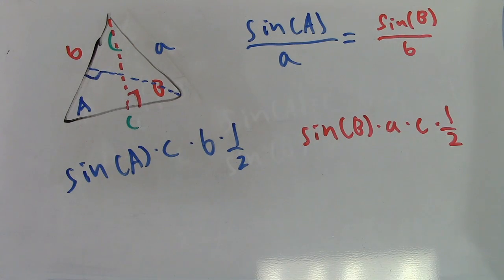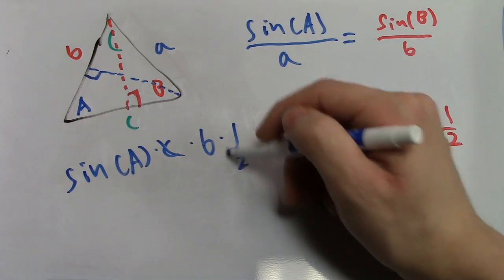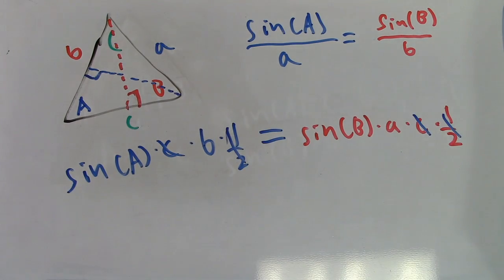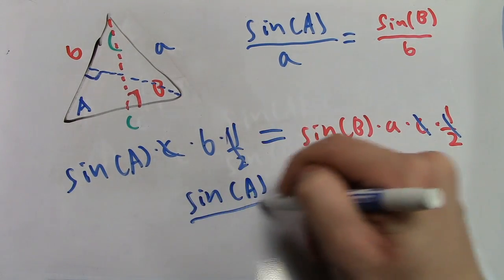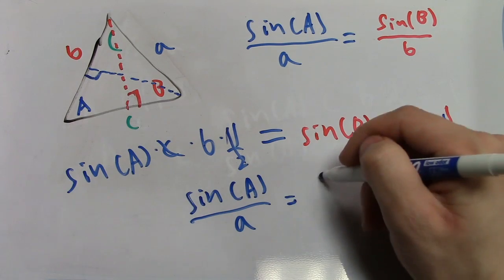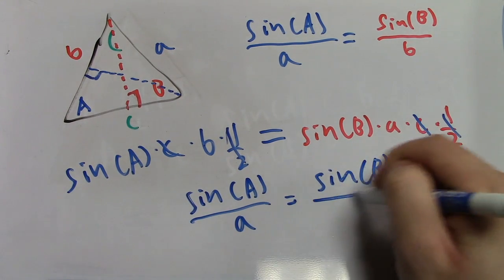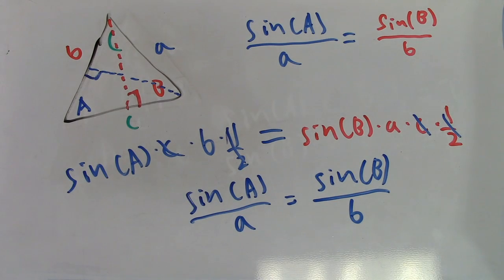Since the area of the triangle is constant, we can set these two equal to each other. This allows us to cancel out side C and one-half, leaving us with sine of A times B equal to the sine of B times A. Dividing both sides by A and B, we see that we get our Law of Sines. Keep in mind that since the sides and angles were arbitrarily defined, the Law of Sines works for all sides of the triangle.